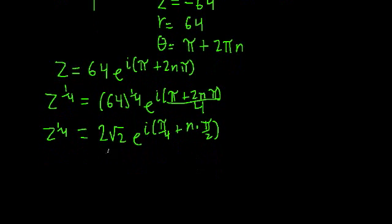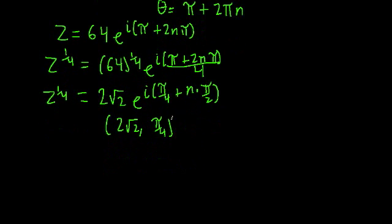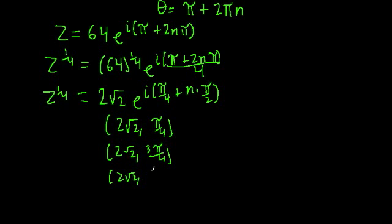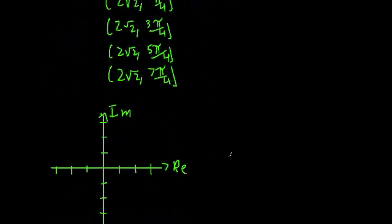We can write out what those points are in coordinate notation. We know the first point is (2√2, π/4). Then adding π/2 to the angle gives (2√2, 3π/4). Then (2√2, 5π/4). And (2√2, 7π/4). These are the coordinates that describe the four solutions, and we can plot those out.